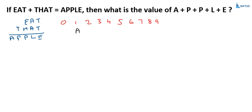Now, come to this part. T is not equal to P. There is a two-digit result here, so there is one carry from this place. We have 1 plus T is equal to P, and this is a two-digit number. So what is the value of T? T must be equal to 9. So, 9 is allocated to T, and if you observe, 1 plus 9 is equal to 10.